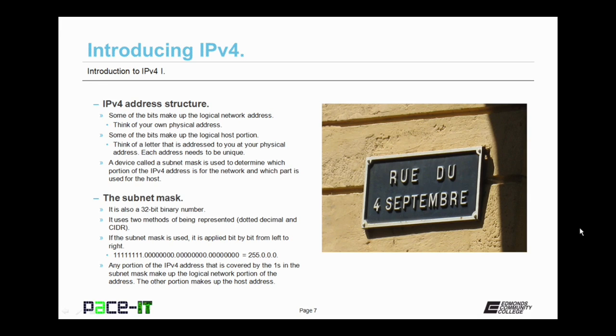Now let's move on to IPv4's address structure. Some of the bits make up the logical network address. Think of your own physical address. And some of the bits make up the logical host portion. Think of a letter that is addressed to you at your physical address. Each address in IPv4 needs to be unique if routing is going to occur. A device called a subnet mask is used to determine which portion of the IPv4 address is for the network and which part is used for the host.